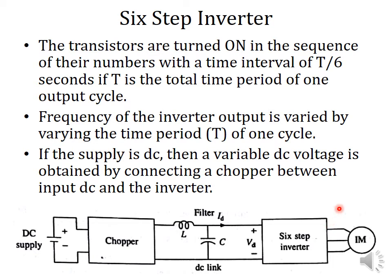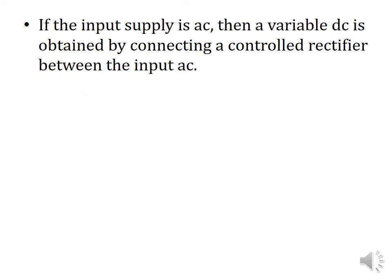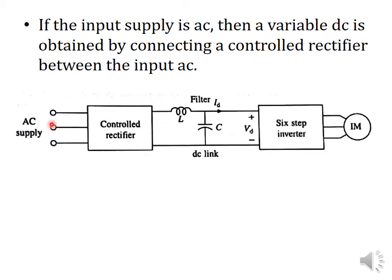If the supply voltage is AC, instead of using a chopper we can use a controlled rectifier. Here, a three-phase AC supply is used with a three-phase fully controlled rectifier. Its output voltage is given to the six-step inverter, which supplies the induction motor. The induction motor is then controlled by V/F control.